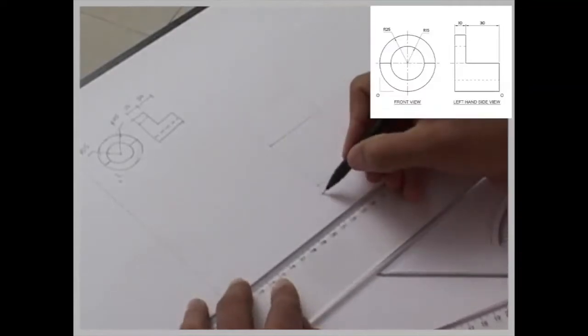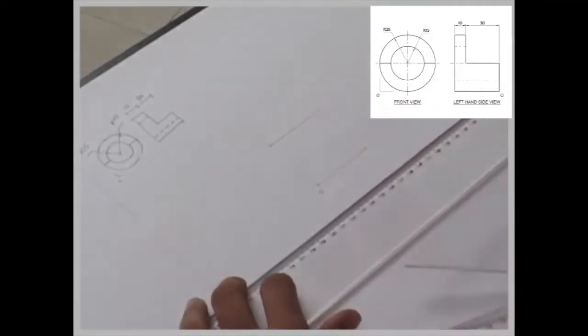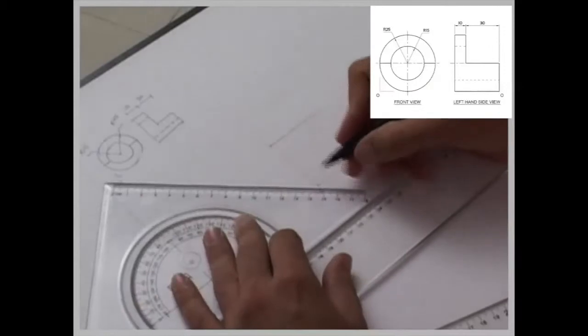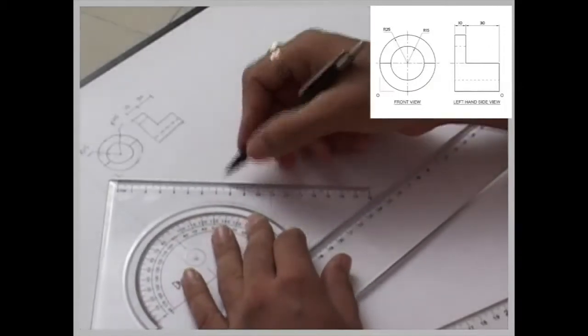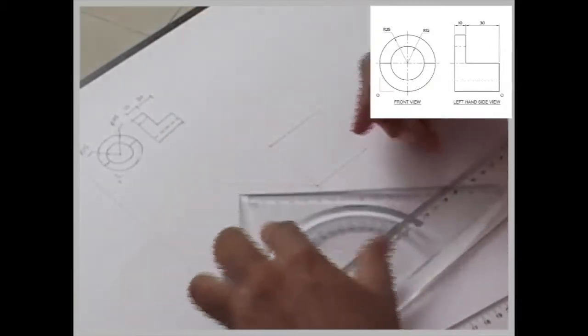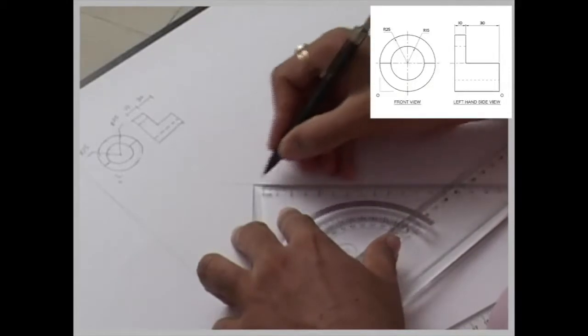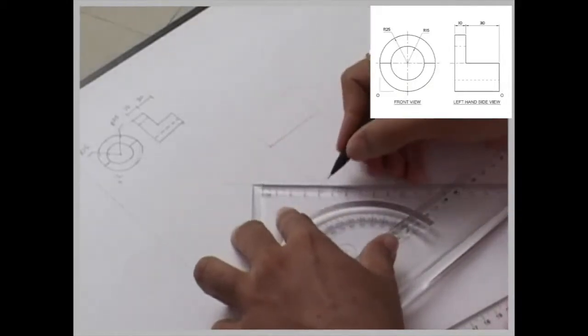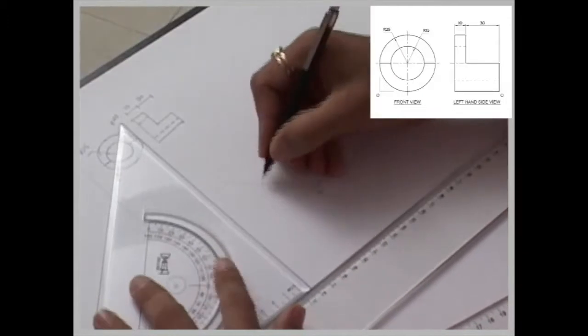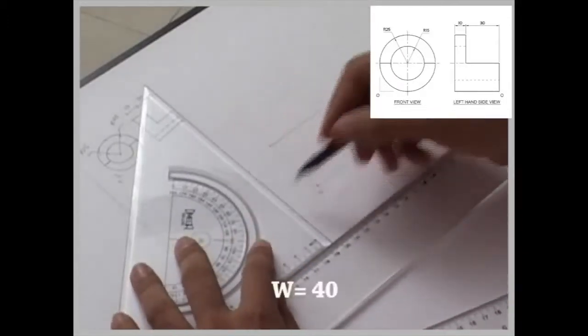If I draw, if I write over here, then 45 will be on this side, then mark 40 on it, because width is 40.